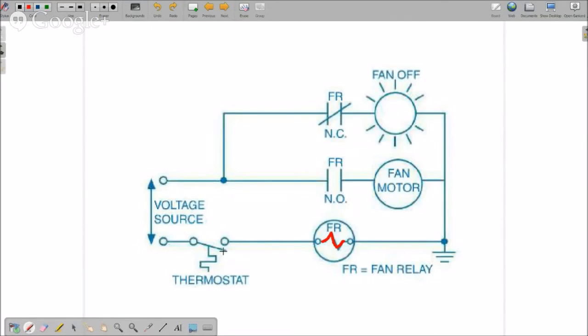Then the thermostat closes. It makes this circuit and we apply power to the fan relay right here. The schematic diagram doesn't change, but physically the circuit does. This normally open contact closes. The fan motor is running and then the normally closed contact opens. That's what you have to do mentally. The fan off light goes out. Can you see that?